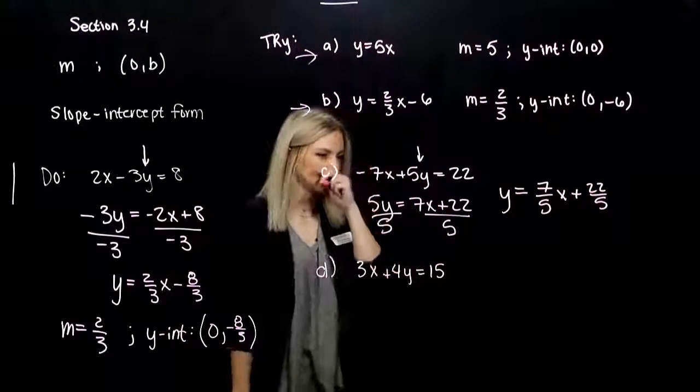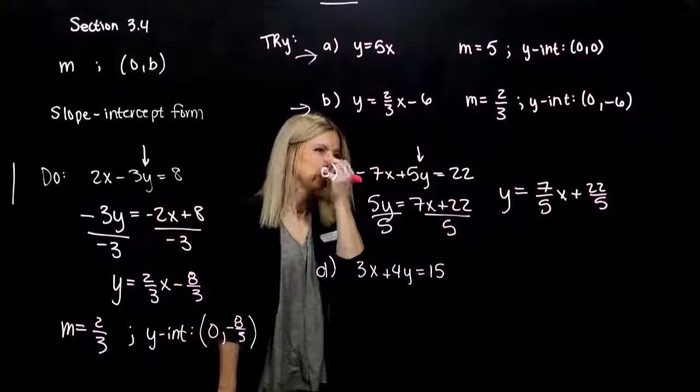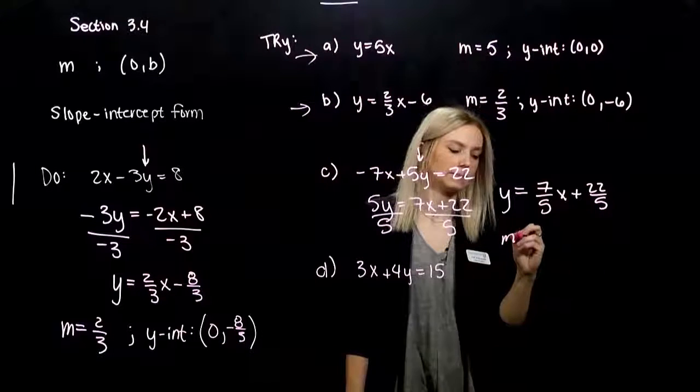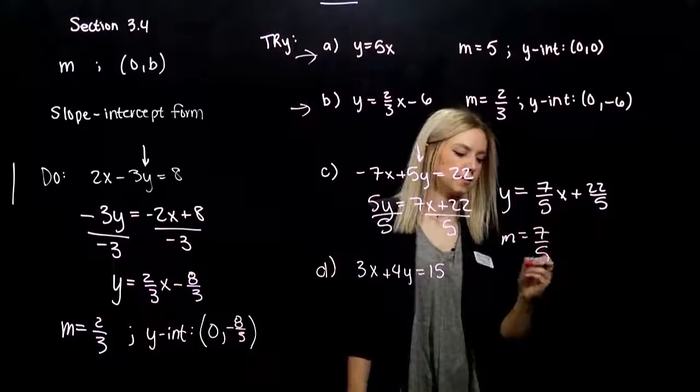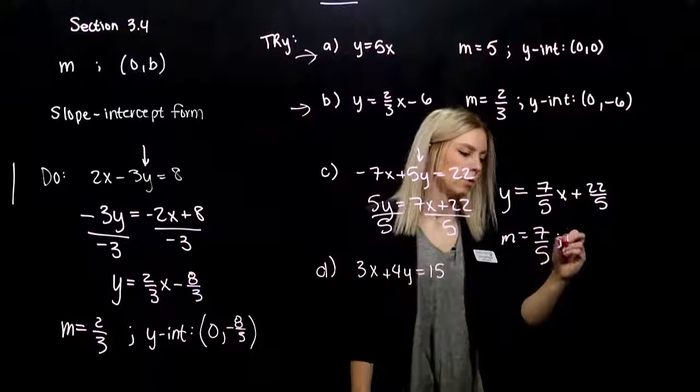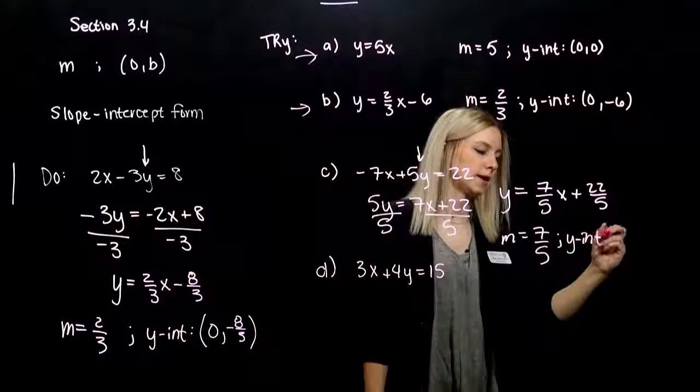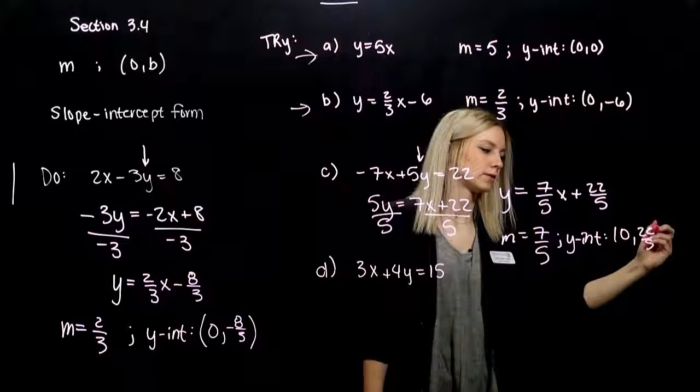We're looking at y equals 7/5x plus 22/5. If it simplifies at all, we should, but it won't. Where is our slope? 7/5. What rate are we changing at? Y-intercept is at the point (0, 22/5).